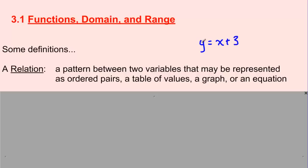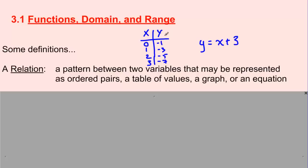y equals x plus 3 is an equation relating the variable y to the variable x. Another relation you could see is a table of values where x and y are listed, with x values of 1, 2, 3, and 0, and y values of negative 1, negative 3, negative 5, and negative 7. Again, this is a relation between two variables x and y. We have dealt with many, many relations in this course and in previous courses.